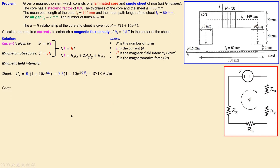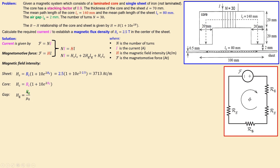For the core, we can use the B-H formula, but the problem is we don't know the magnetic flux density in the core — it is an unknown. For the gap, we cannot use the B-H formula since it is only valid for the core and sheet. Instead we use the expression with the permeability of vacuum, μ₀, since we assume vacuum and air are equal. But again this requires the magnetic flux density in the gap, which is also unknown.